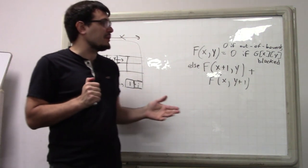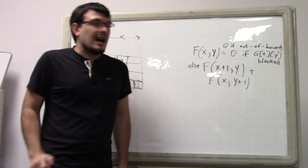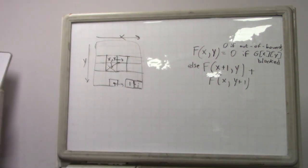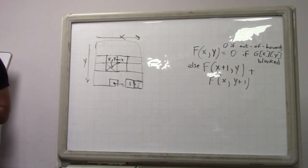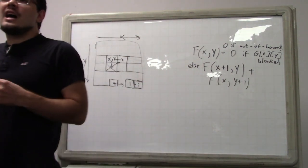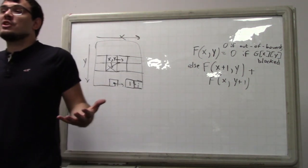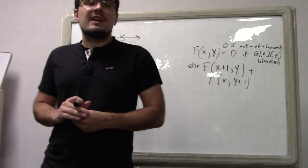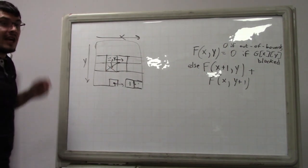Another way to do this problem: you could define F(x,y) not as the number of ways to reach the goal from the current position, but instead as the number of ways to get to that position from the initial position. Those two are equivalent. In the current formulation the overall solution is F(0,0) — the number of ways to get to the end from position 0,0, the top left corner. If you define it the other way, the overall solution would be F(x_max, y_max).